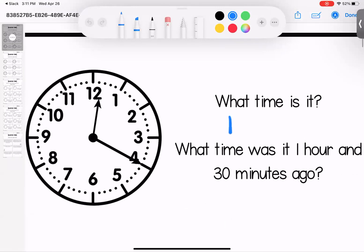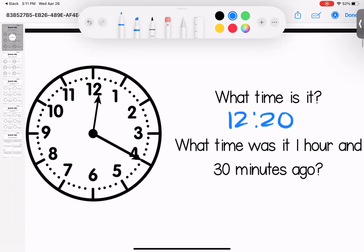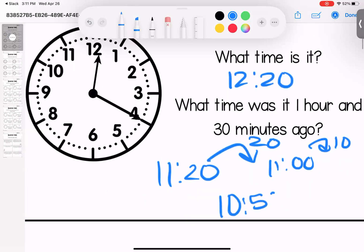First one says what time is it? It is 12:20. What time was it one hour and 30 minutes ago? Well if we take away one hour, 12:20 to 11:20, take away another 30 minutes, 11:20 take away 20 is 11 o'clock, take away 10 is 10:50.